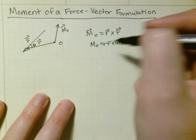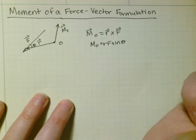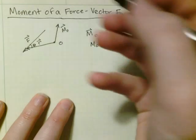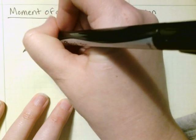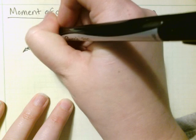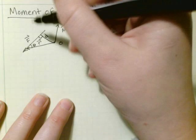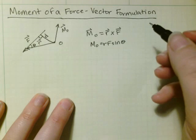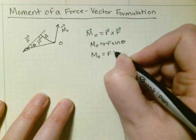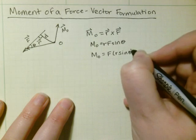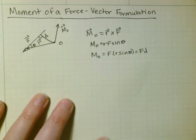And so this magnitude can be shown that it's the same thing as the scalar formulation because, from O to F, a perpendicular line from O to F would be D. And D is R sine theta. So this is the same thing as the scalar formation.